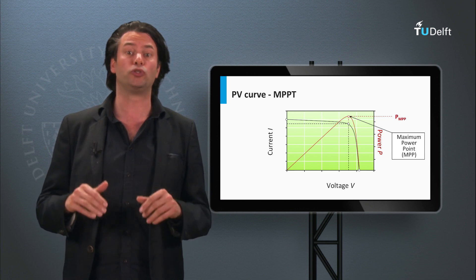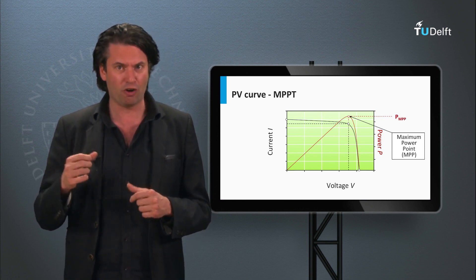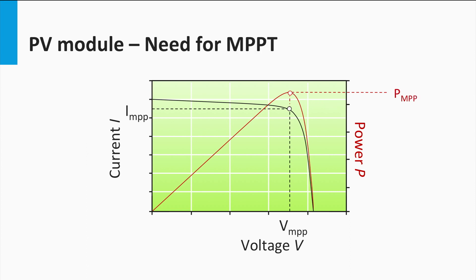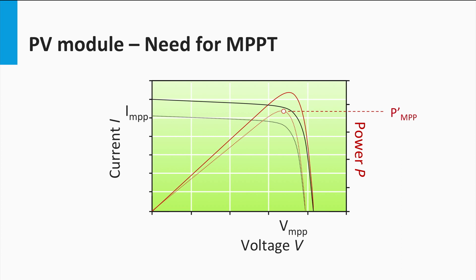This point corresponds to the peak of the PV curve or the knee of the IV curve. The simplest way to do this is to force the voltage of the PV module to be that at the maximum power point, or regulate the current to the right amount as that of the maximum power point using converters. But what if, after forcing the PV module to operate at maximum power point, the ambient conditions like irradiance or temperature change and in turn cause the IV-PV curve to change as well?